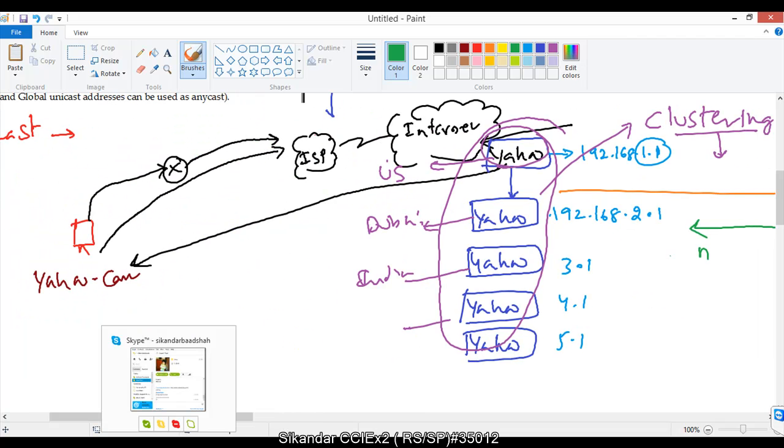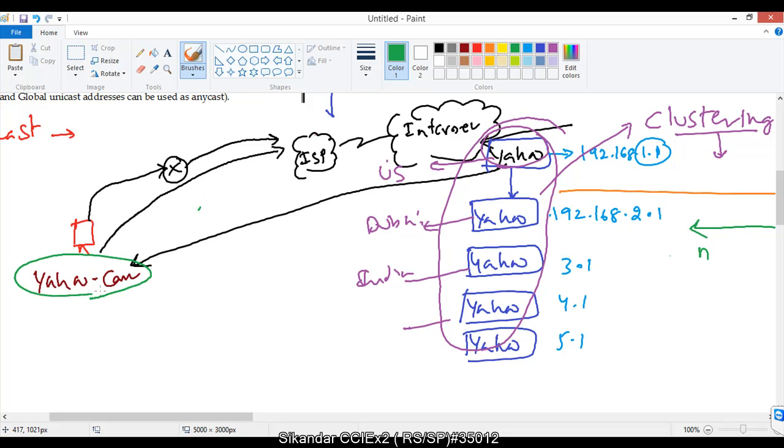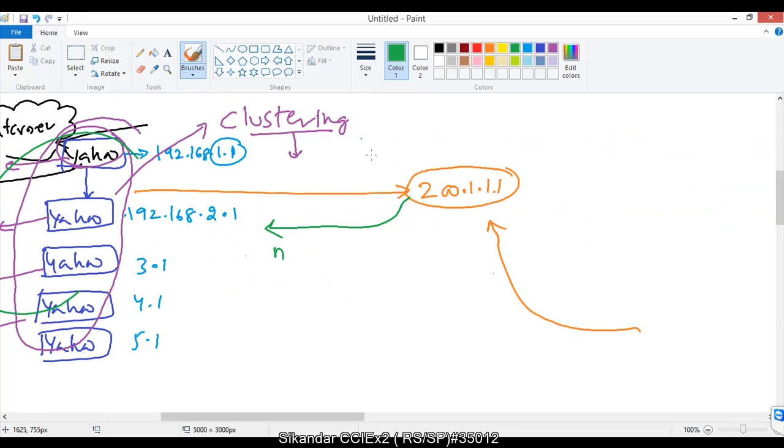So now, we are continuing the IPv6 anycast addresses which we discussed just now. When you send a request to the Yahoo server, there are multiple servers placed in different locations that are formed as a cluster and referred to as a group. The request will be forwarded by any one of the servers nearest to that.